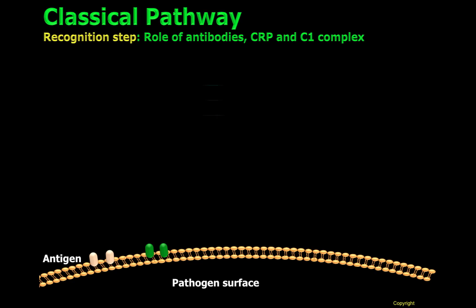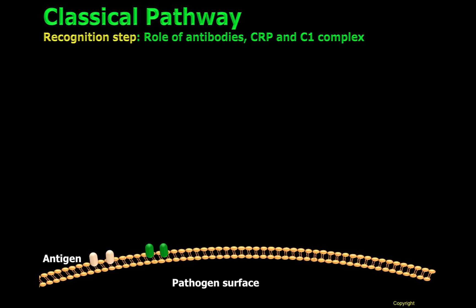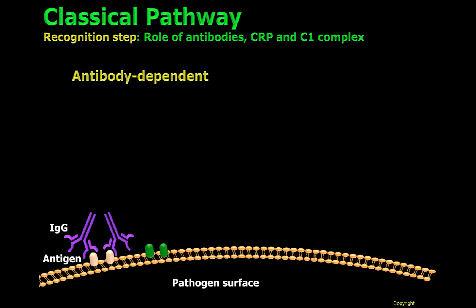The classical pathway initiates when C1, an important complement component that is unique to the classical pathway, binds to the surface of pathogens. C1 will bind to pathogens indirectly by two mechanisms. The first mechanism requires antibodies to be bound to the surface of pathogens. This is what we call antibody-dependent recognition of danger.